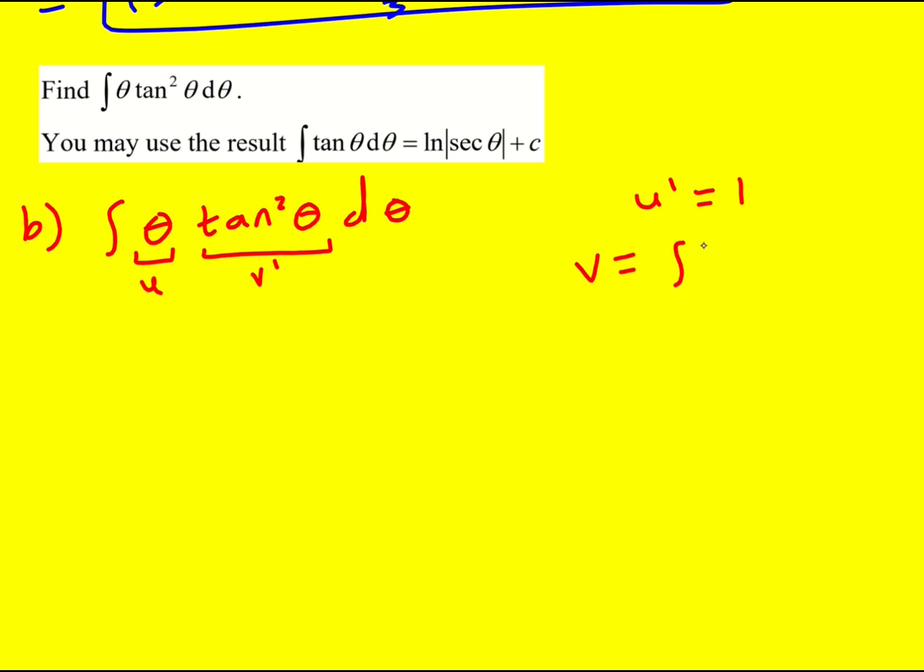So u dash is going to be 1 and then v is going to be the integral of tan squared theta. Now this is actually a little bit awkward and it probably relies on you, you know, having seen something like this before.